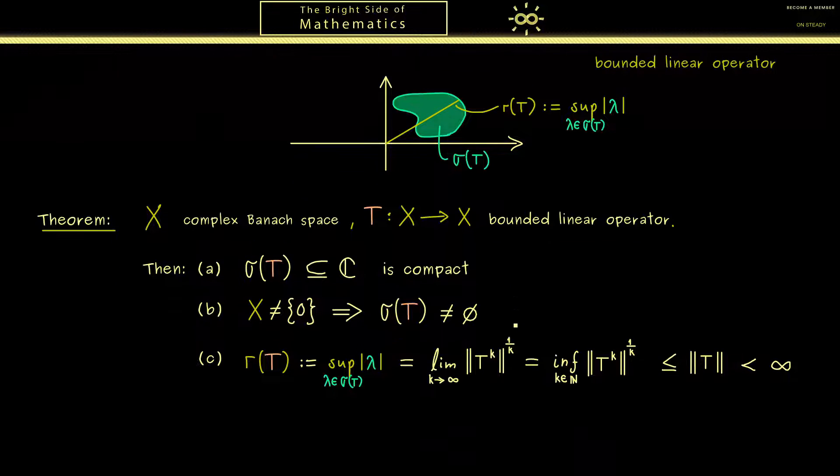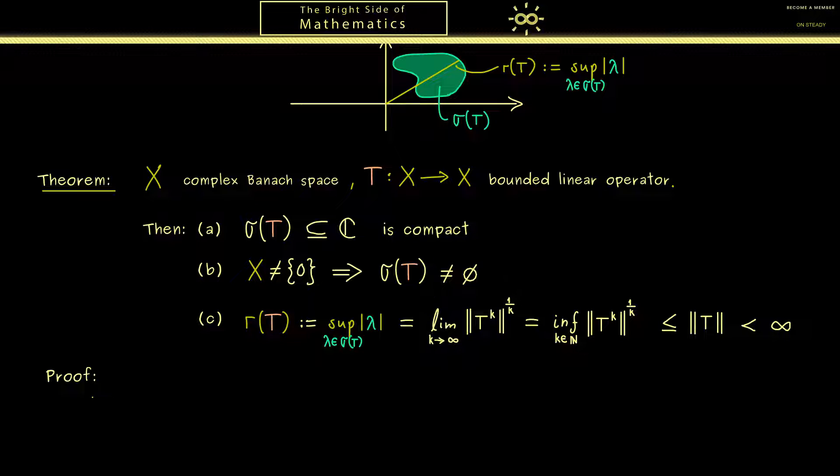And this is now something we can immediately prove. For this let's use the properties we used in the last video. For example the Neumann series is very helpful here. Therefore let's take a complex number lambda which is in the absolute value greater than the operator norm. And now we want to show that this number can't be in the spectrum of T. And in fact this is immediately given by the Neumann series.